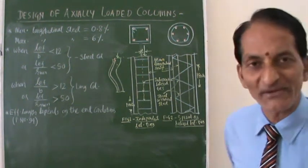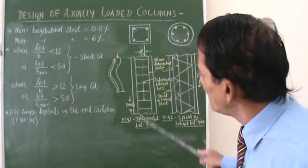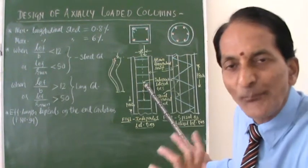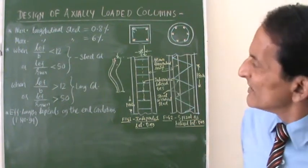That is the reason why these lateral ties, either in the form of independent lateral ties or helical reinforcement, are very important. A column without ties you cannot do - it is also an important element in the column.